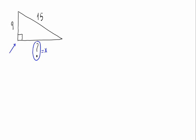Using Pythagoras' theorem, we have the addition of the legs: X squared plus 9 squared is equal to the hypotenuse squared, 15 squared.